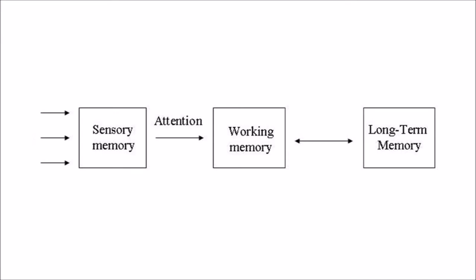Their model of human memory, called the Atkinson-Shiffrin, or AS, or three-box model, is based in the belief that we process memories in the same way that a computer processes information.